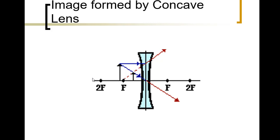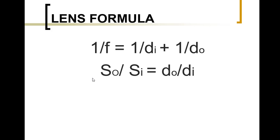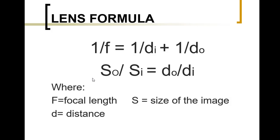That is always the case for concave lenses. For lenses, we use the lens formula: 1 over the focal length equals 1 over the distance of the image plus 1 over the distance of the object. We also have the size of the object over the size of the image equals the distance of the object over the distance of the image.